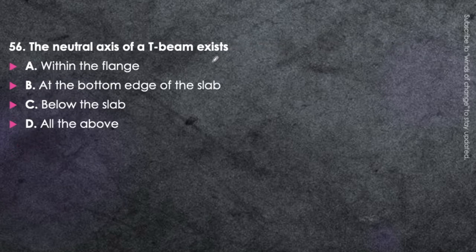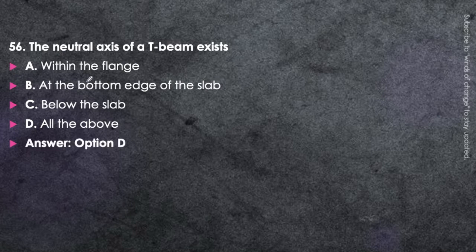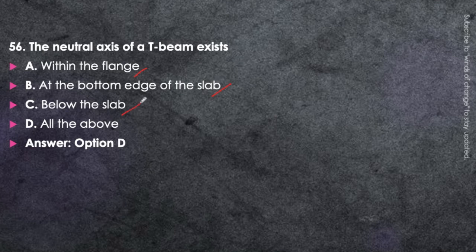Next question: The neutral axis of a T-beam can exist within the flange, at the bottom edge of the slab, or below the slab — all of the above is correct. When the neutral axis lies within the flange, the beam acts as a rectangular beam. Based on its position, the bending moment capacity of the T-beam is determined accordingly.